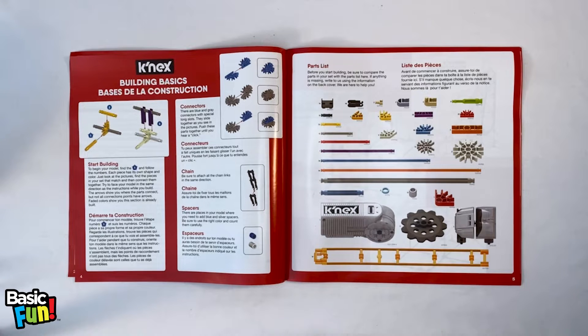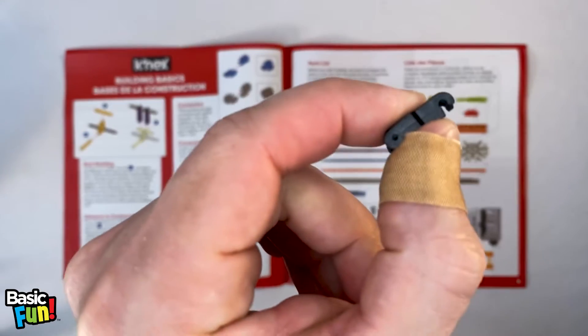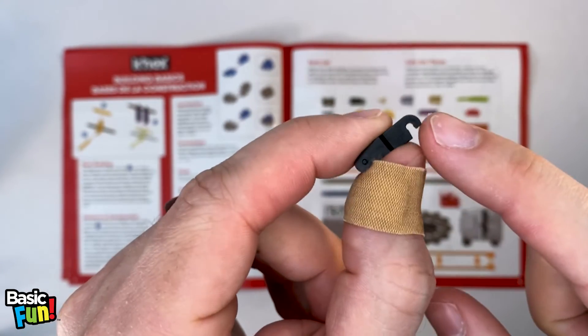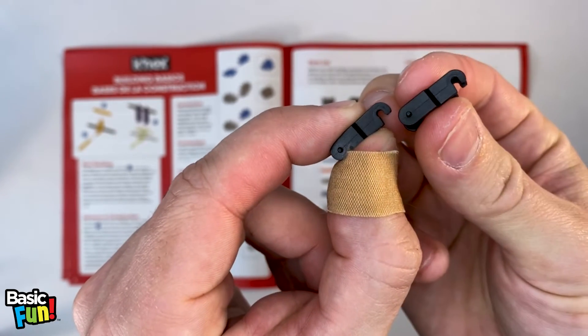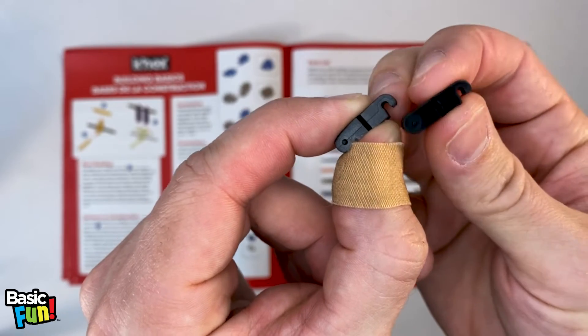The next part mentioned in this page is the chain link. In order for these to be assembled correctly, take a chain link just like so and note the opening on this side. Then take another chain link and make sure that opening is also on the same side.